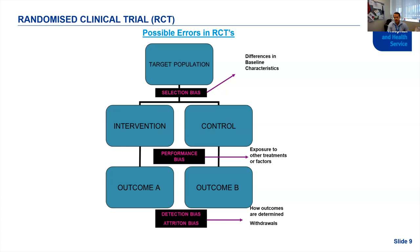Looking at a basic RCT study schema, there are different levels of bias that can be introduced. Selection bias refers to differences in baseline characteristics — for example, if only really healthy people chose to take the treatment, it might look super effective but only because participants were already healthy. Using a basketball analogy: if one team is taller than the other because only tall people wanted to play on that team, there is selection bias giving that team an advantage.